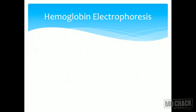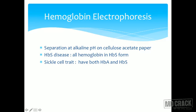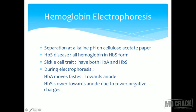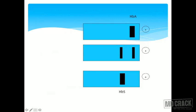Hemoglobin electrophoresis is more preferred. It is performed at alkaline pH on cellulose acetate paper. In HbS disease, all hemoglobin is in HbS form. In sickle cell trait, both HbA and HbS are seen. During electrophoresis, HbA moves fastest toward the anode, while HbS moves slower due to fewer negative charges — glutamate, a charged amino acid, has been replaced by valine, which is uncharged.